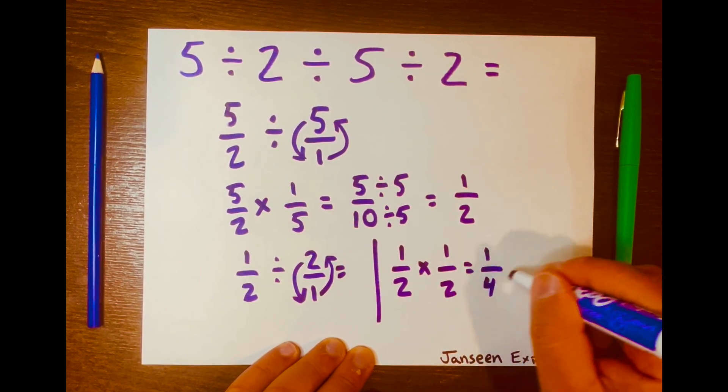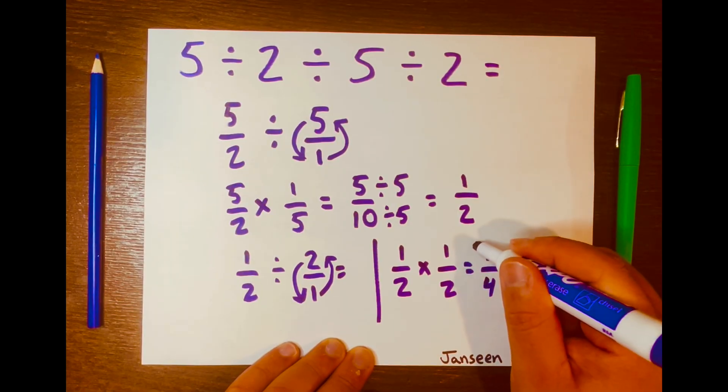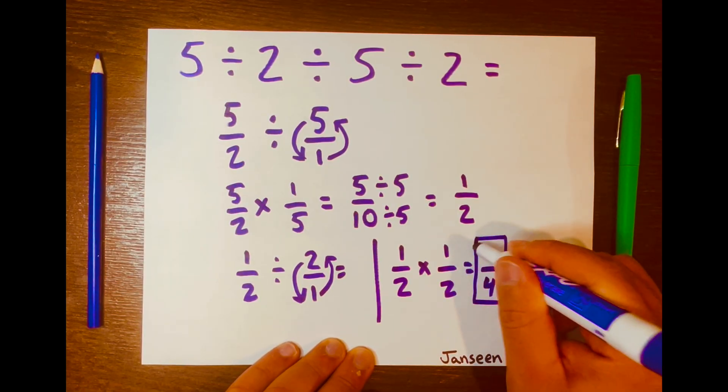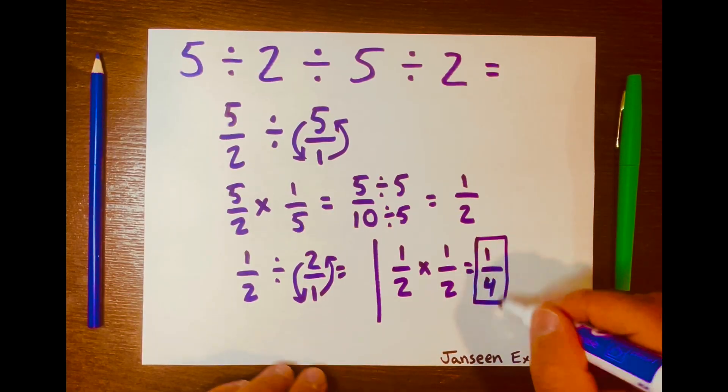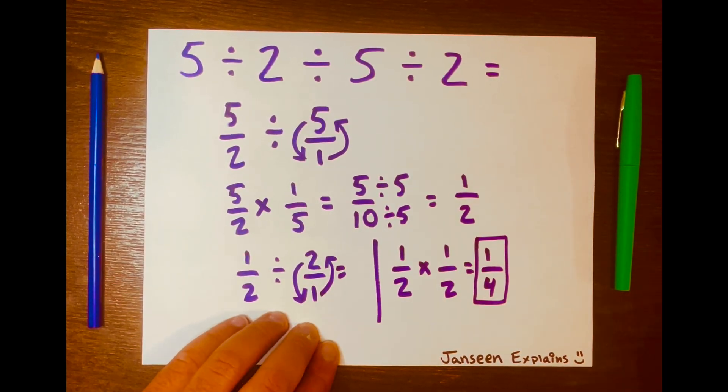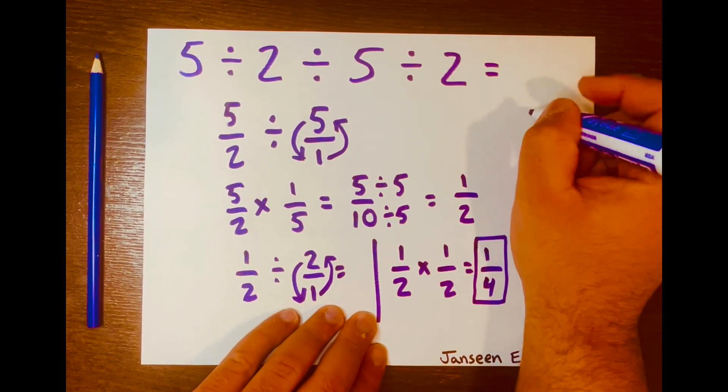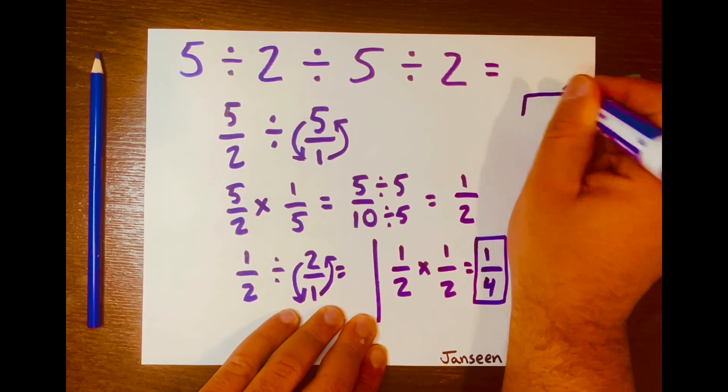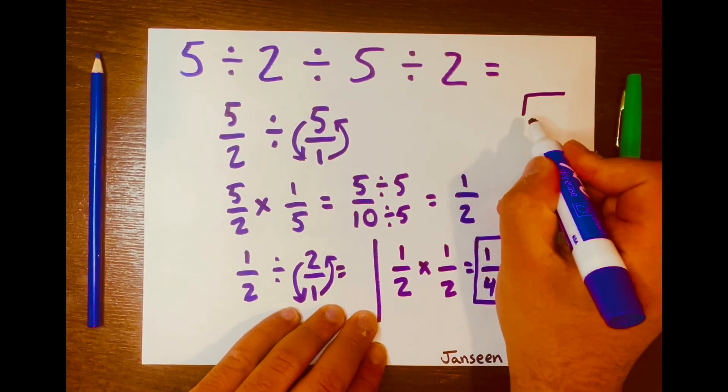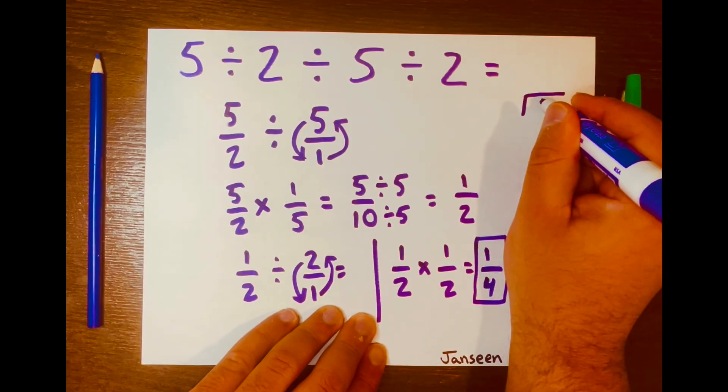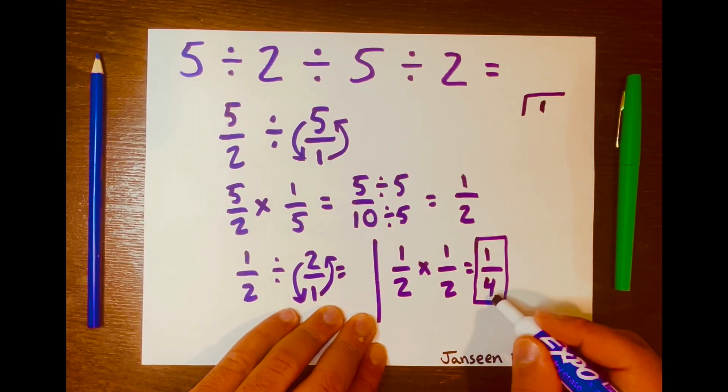That's it. You can't simplify this further. So your answer is 1 over 4. Let's go ahead and get a decimal answer. 1 over 4. We'll use long division, and we do have space here. The dividend will be 1, and the divisor will be 4.